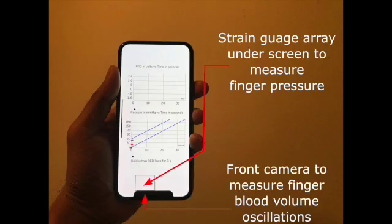Here is a video demonstrating an iPhone application for blood pressure monitoring via the oscillometric finger pressing method. The application employs the strain gauge array under the screen and the front camera to respectively record the applied finger pressure and blood volume oscillations and a visual display to guide the finger actuation.